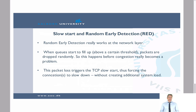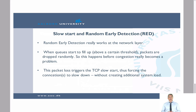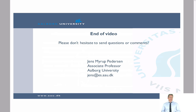There is a challenge, however: random early detection works well with TCP, but for UDP — where there is no acknowledgement mechanism unless implemented at the application layer — it is more difficult. If there are many UDP connections, they may take up space because TCP is behaving nicely and slowing itself down. That covers random early detection, and this concludes the video — thank you for listening.